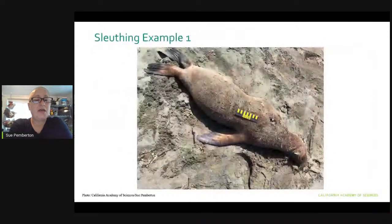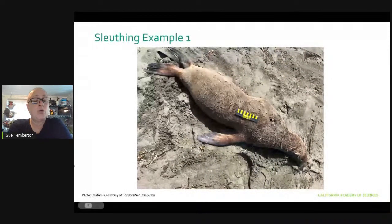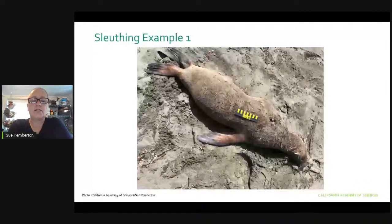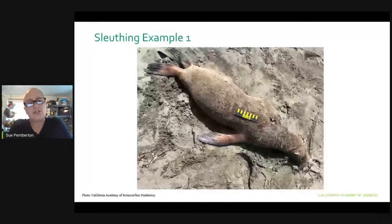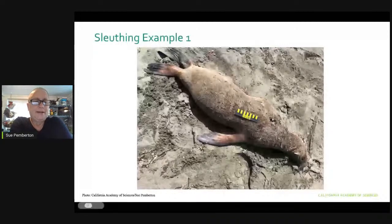Here's our first sleuthing example. We have the luxury of a scale bar. Features to note: long, nail-less front flippers; a light brown pelage; longer rear flippers with toes all about the same length; an external ear flap; and a little dog-like face. The scale bar is 15 centimeters. Take a couple of seconds to look at these features and think about what species this might be before we go to the answer slide.